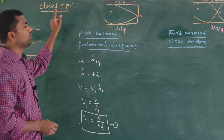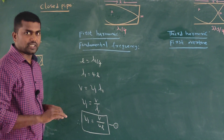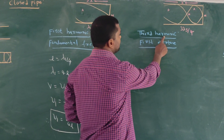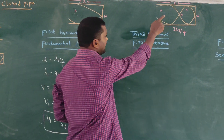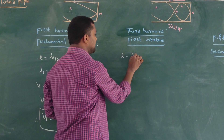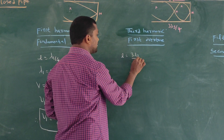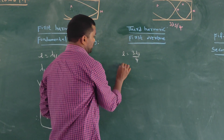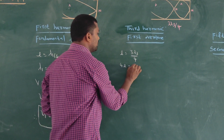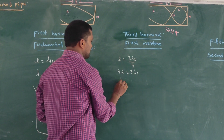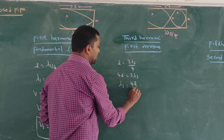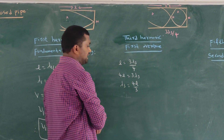The next case is the third harmonic. The length L is equal to 3λ₃/4, so 4L is equal to 3λ₃. Therefore, λ₃ is equal to 4L/3.